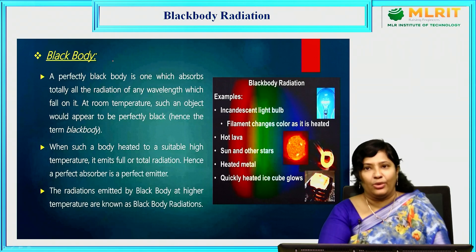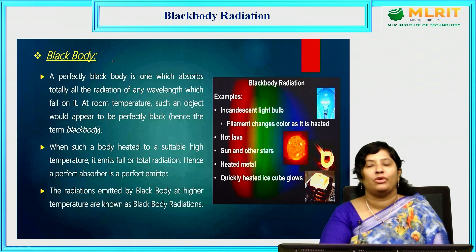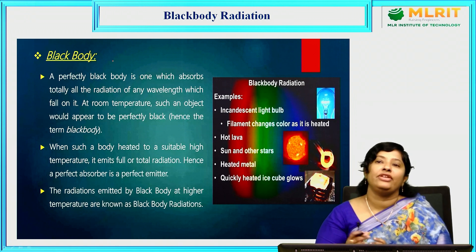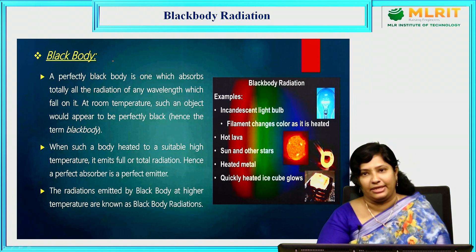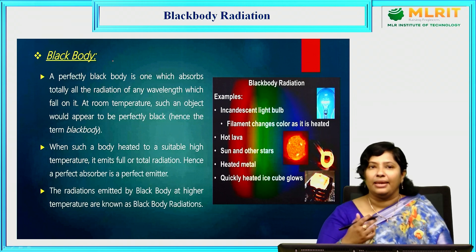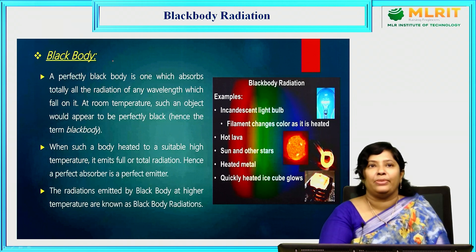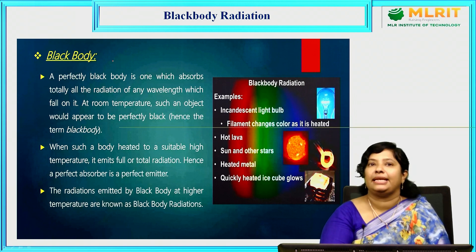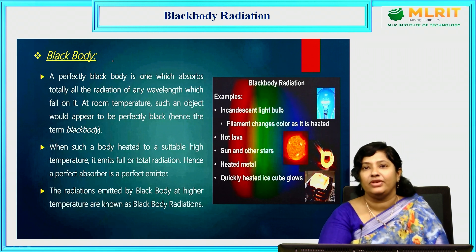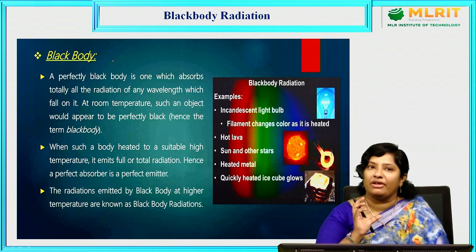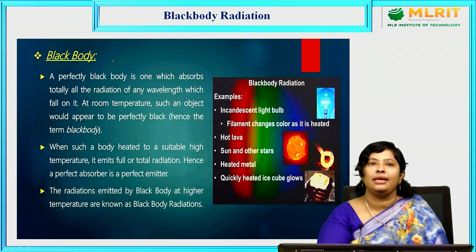A perfect blackbody is one which absorbs all the radiations of different wavelengths incident on it. At room temperature, such an object appears perfectly black, and hence it is called a blackbody.